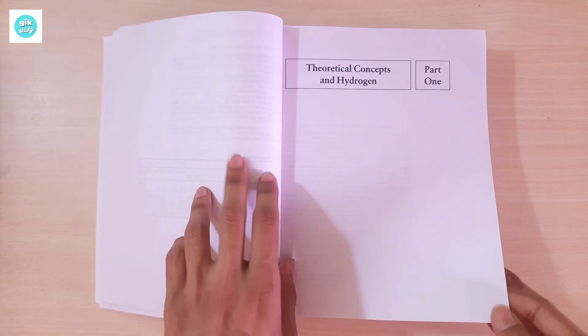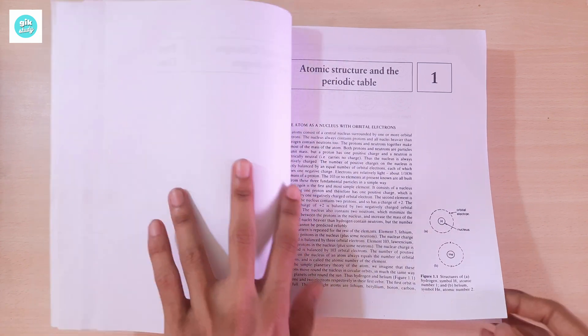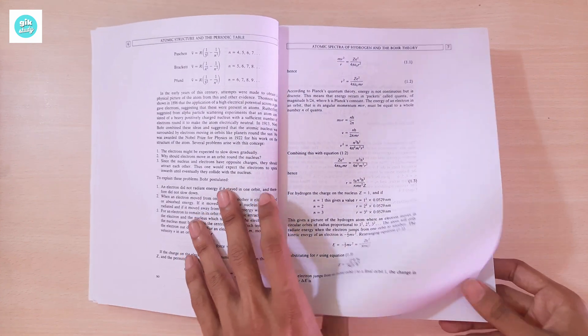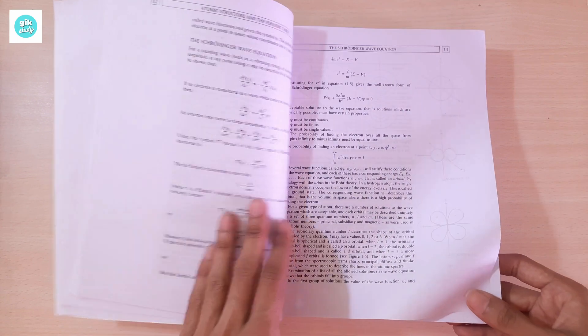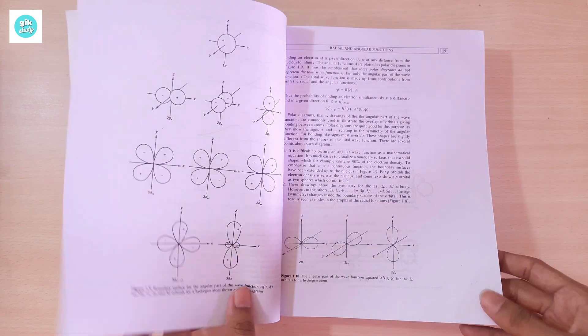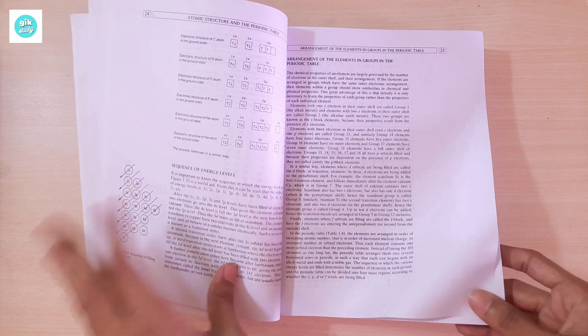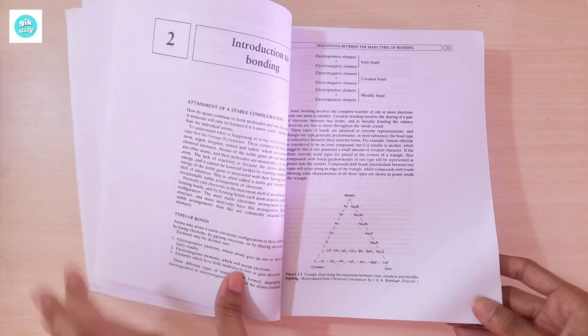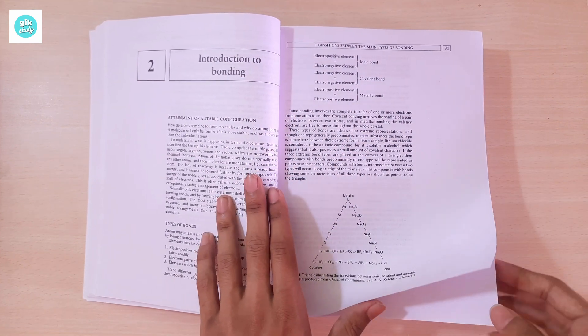Here's Part 1: Theoretical Concepts and Hydrogen. Chapter 1: Atomic Structure and the Periodic Table. I'll turn the pages so you can see the book. I'm not going to explain what's in it. Here's Chapter 2: Introduction to Bonding.